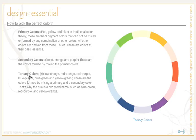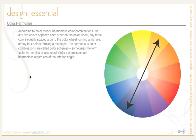That's why each tertiary hue has a two-word name such as blue-green, red-purple, or yellow-orange. According to color theory, harmonious color combinations use any two colors opposite each other on the color wheel, any three colors equally spaced around the wheel forming a triangle, or any four colors forming a rectangle — which are simply two pairs of opposite colors. These are called color schemes, or color harmonies, and they remain harmonious regardless of rotation angle.